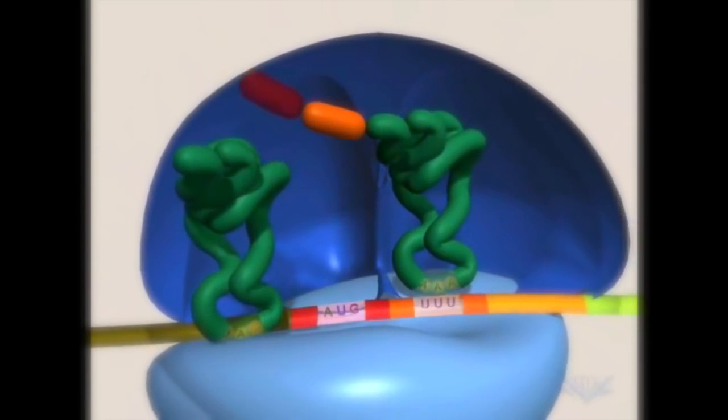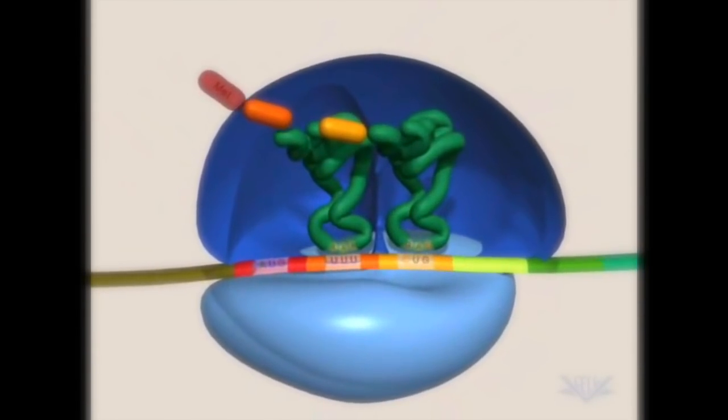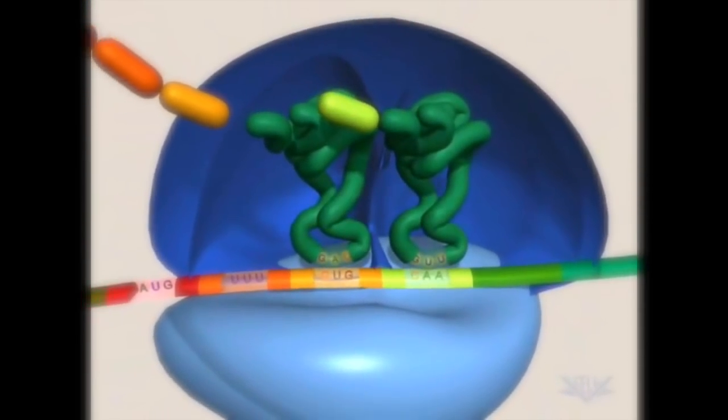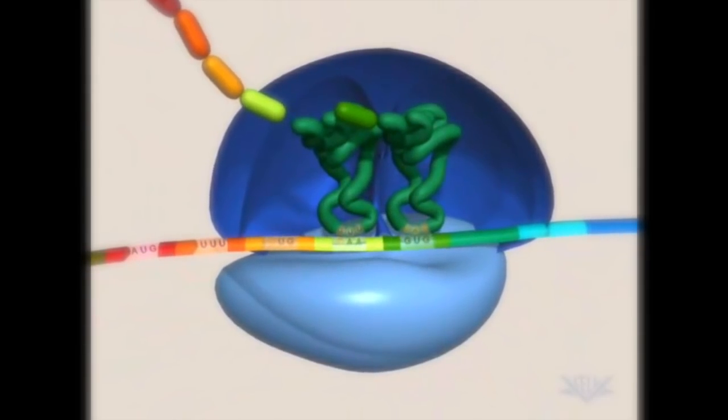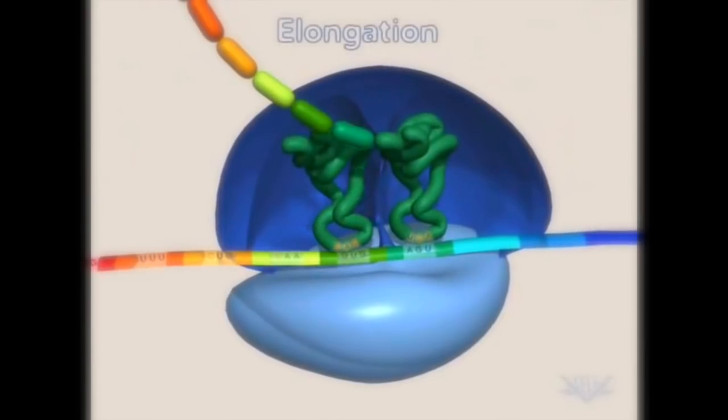The first tRNA exits, the ribosome moves along the mRNA, and the next tRNA enters. These are the basic steps of elongation.